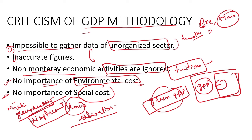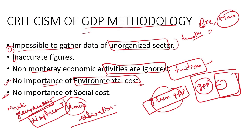This completes our GDP chapter and National Income Accounting. There is some data on primary, secondary, and tertiary sector contributions to GDP, and investment percentages in different sectors — I will check the current data and upload that information as a PDF on Telegram. You can download the chapter from Telegram.